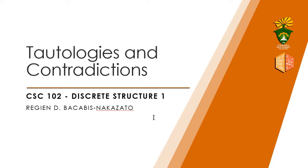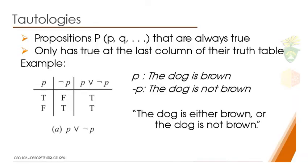Good day! In this lecture video, we will be talking about tautologies and contradictions. Tautology might be new to you. A tautology is just a proposition — for example, a compound proposition composed of P, Q, and more — that is always true. So tautologies are just propositions that are always true.